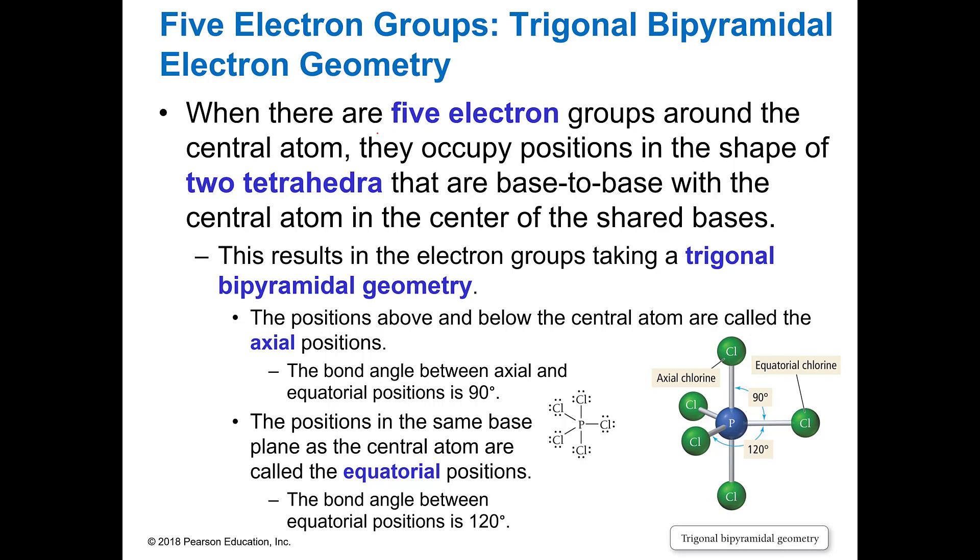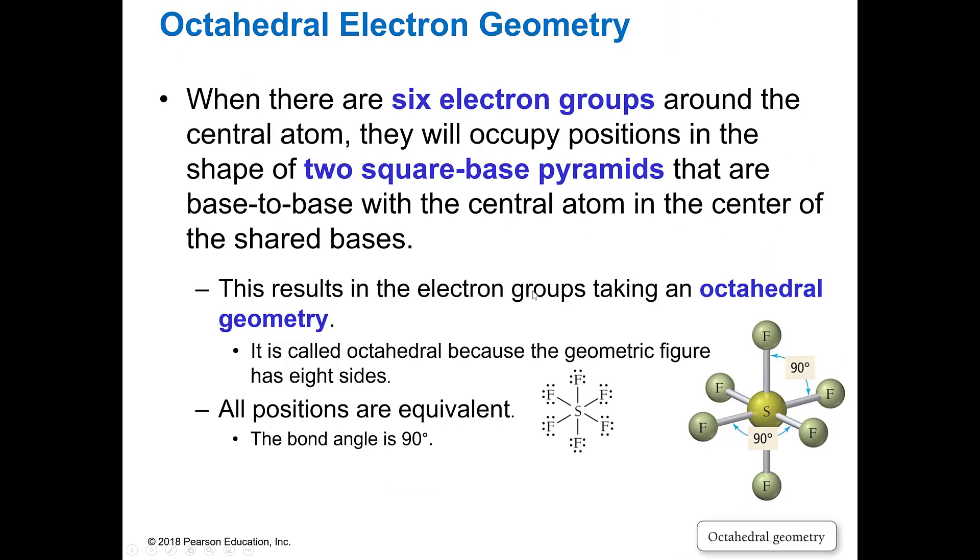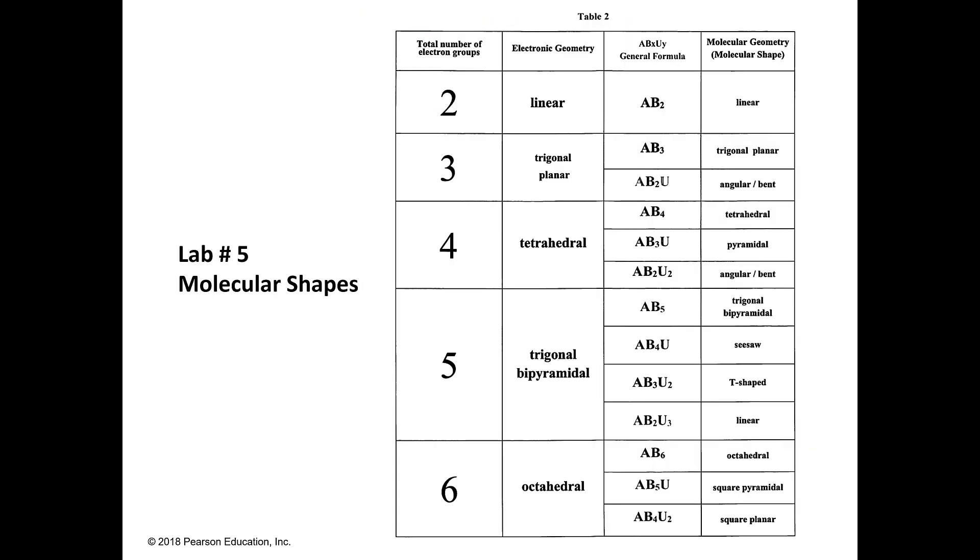If you have five electron groups, you're going to have trigonal bipyramidal. And if you have six electron groups, you're going to have octahedral, which is two square base pyramids stacked on top of each other.